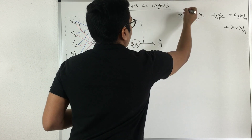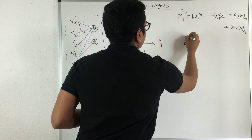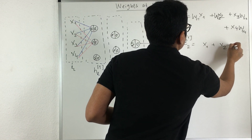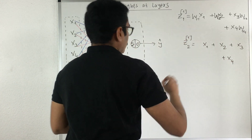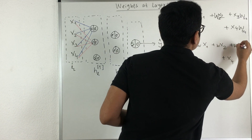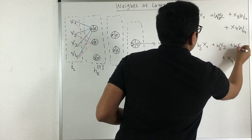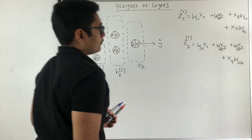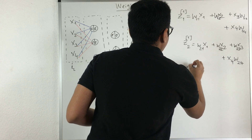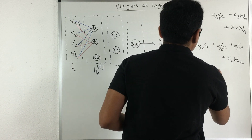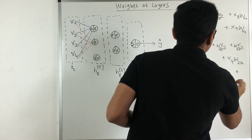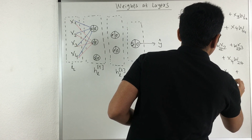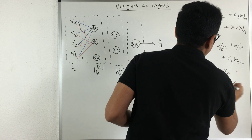For the second neuron at the first layer we have z2 superscript [1], with weights w21, w22, w23, w24. Similarly, for the third neuron we have z3 superscript [1], with weights w31, w32, w33, w34 applied to inputs x1, x2, x3, x4 respectively.